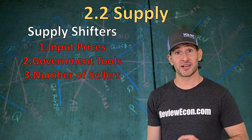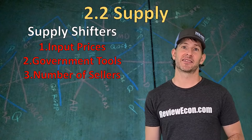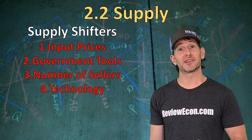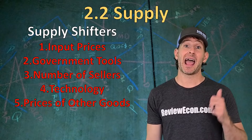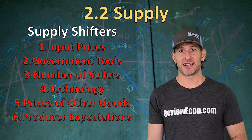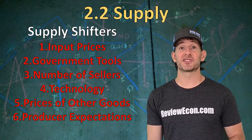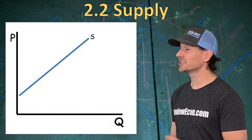The third supply shifter is number of sellers — sometimes called competition. An increase in the number of businesses producing a product will increase supply; a decrease will decrease supply. Technology is another shifter — increases in technology also increase supply. Prices of other goods can sometimes impact supply as well: if the price of wheat goes up, farmers may make more wheat and decrease their supply of corn. The last one is producer expectations — just like with consumers, the future impacts what businesses do today.